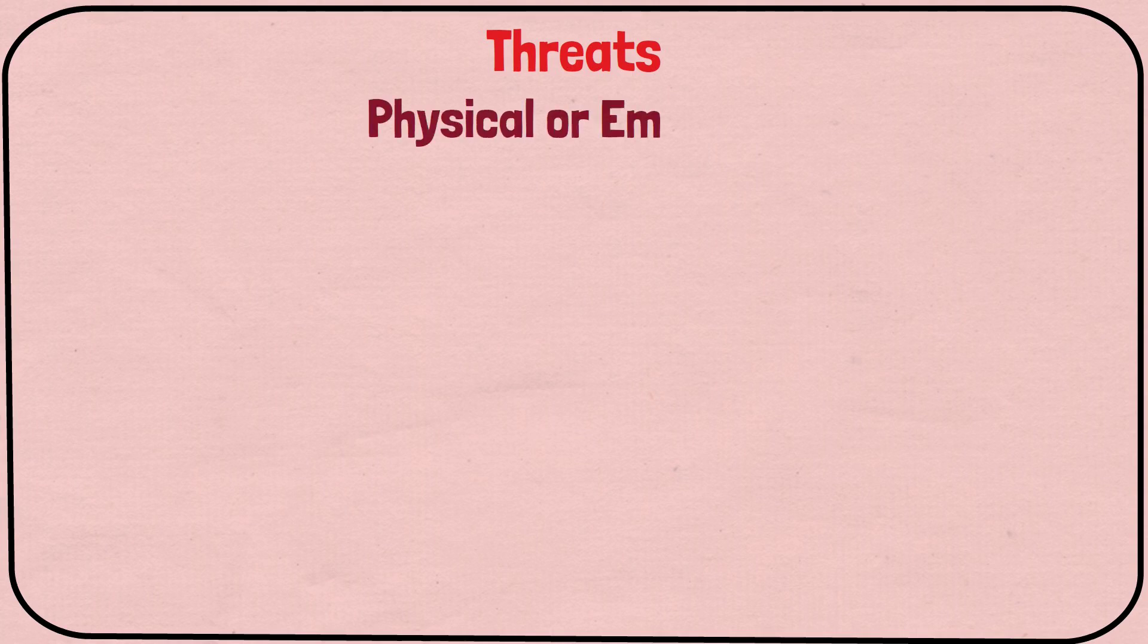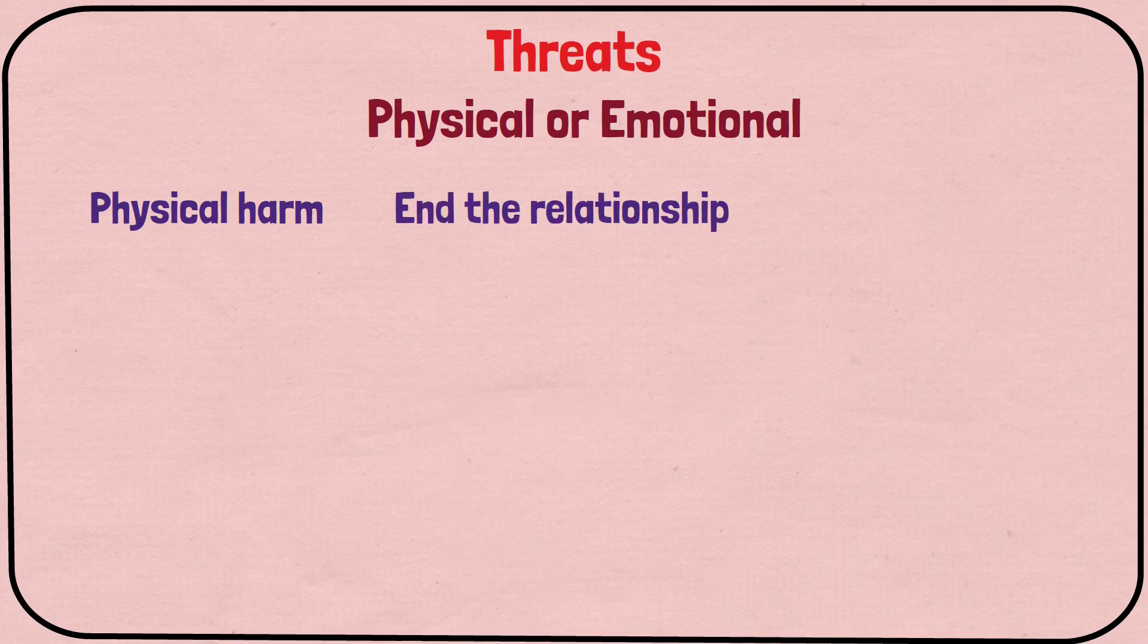Emotionally abusive partners may also employ threats. Whether it's physical or emotional threats, it could be a threat of physical harm, a threat to end the relationship, or a threat to harm themselves if you don't do what they want. No matter what the threat is, recognize it for what it is.